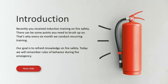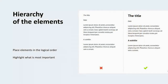The next rule is the hierarchy of elements. The essence of this method is to draw attention to a particular element through contrast, fonts, size, shape, location, and color. This is an especially important rule when you are creating courses that must be accessible. Let's move on and look at our example.